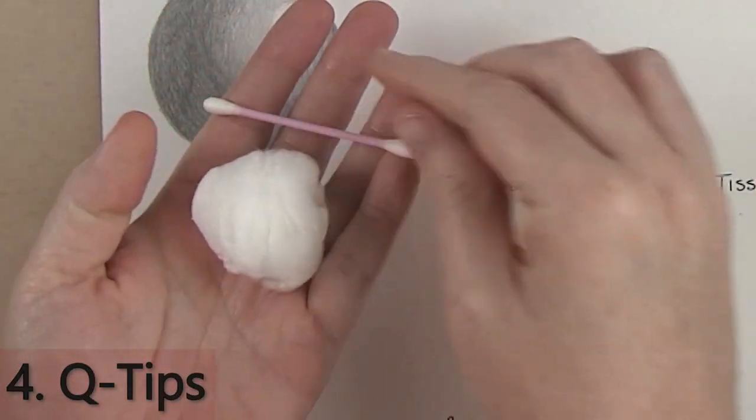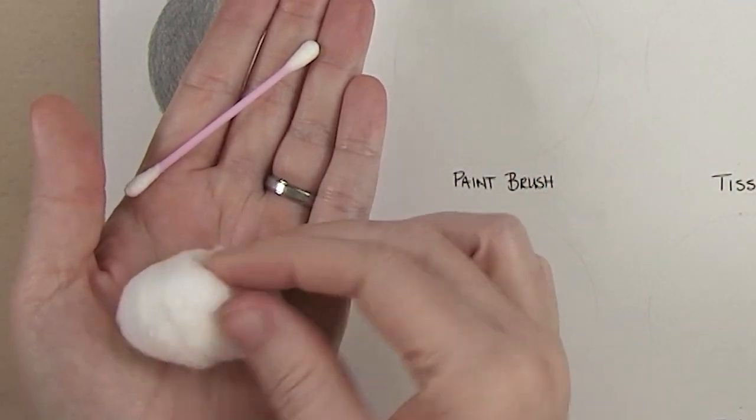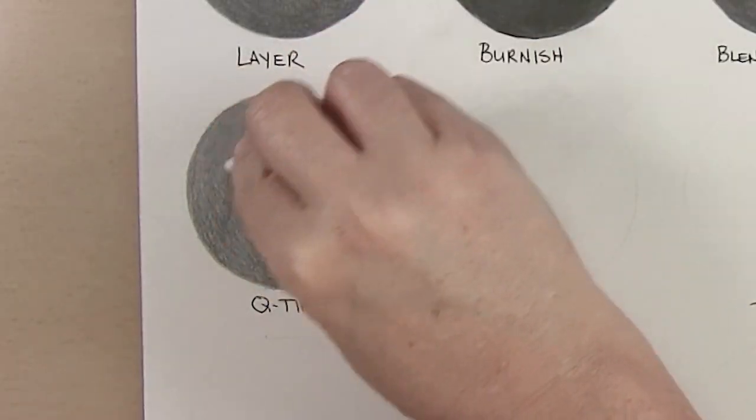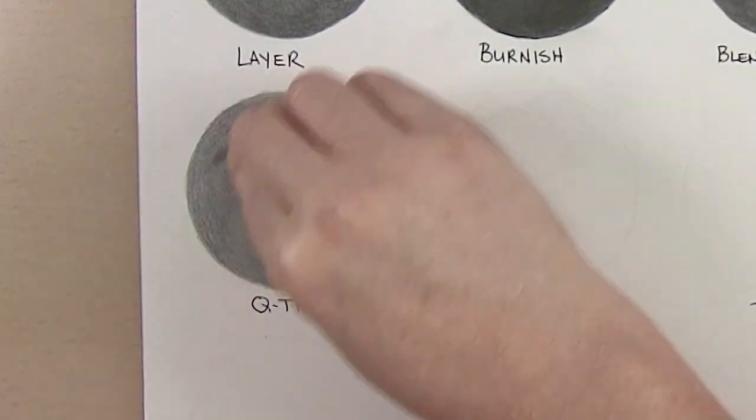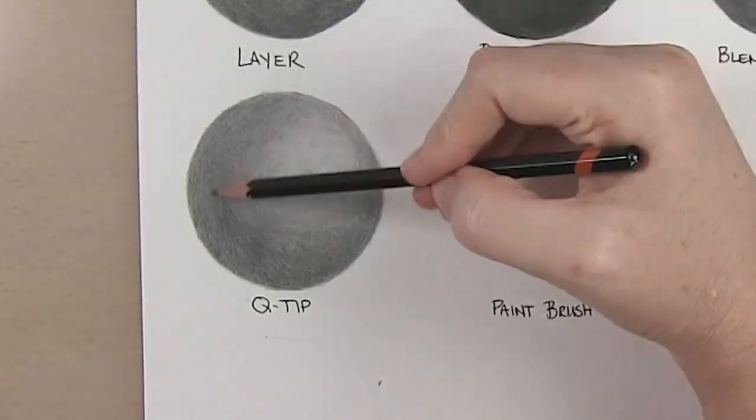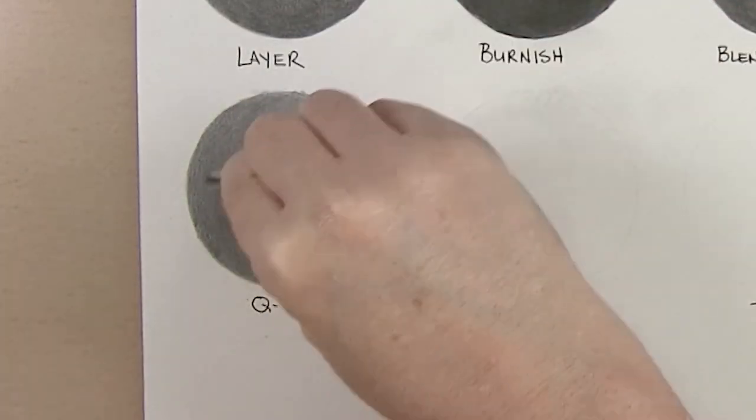The fourth way to blend graphite is with a q-tip also known as cotton buds and cotton swabs or you can use a cotton ball depending upon the size of the area you are blending. You lightly blend the graphite with the q-tip using circular or single sweeping motions. This will leave a smooth area behind. Using q-tips are very cost effective and you can throw them away when you're done. They're great for tight areas like eyes and doesn't damage the tooth of the paper.